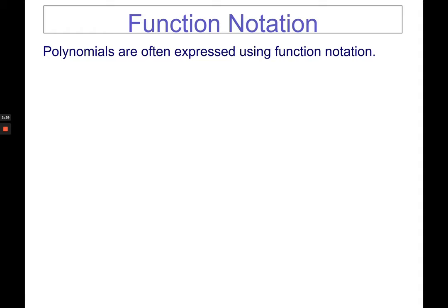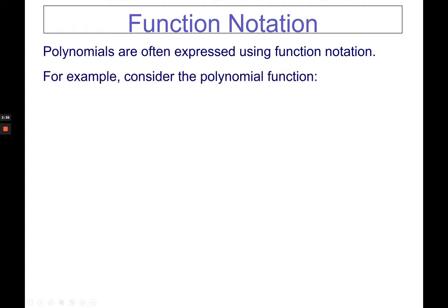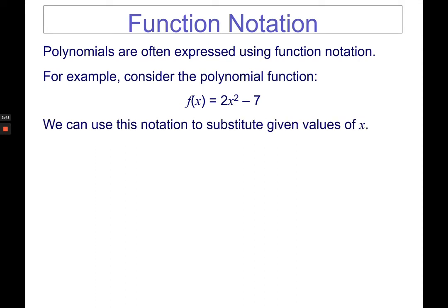Polynomials are often expressed using function notation. For example, consider the polynomial function f of x equals 2x squared minus 7. We can use this notation to substitute given values of x. Find f of x when x is negative 2 for part a, and find the value of the function if x is equal to t plus 1 for part b.